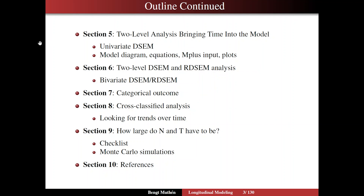In section five, I turn to the DSEM topic itself. We start with a two-level analysis where we bring time into the model explicitly via the T-interval option. I propose first looking at univariate DSEM — one variable — to get to know and understand how you should model it before starting a very complicated model. I'll discuss various ways of drawing model diagrams, take a look at some equations, and then also input and plots. The next step is two-level DSEM and residual DSEM in the bivariate case — vector autoregressive models, cross-lag models of the DSEM and RDSEM kind. In section seven, I take a quick look at categorical outcomes and a binary version of the negative affect variable.